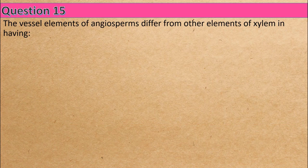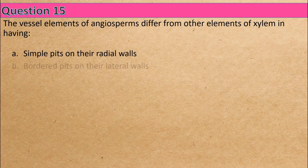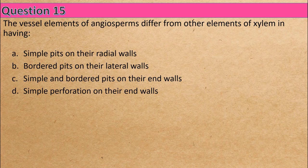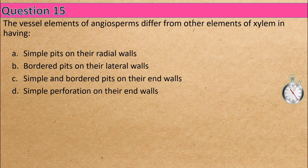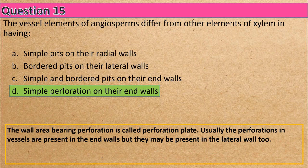Question 15: The vessel elements of angiosperms differ from other elements of xylem in having — Option A: simple pits on their radial walls, Option B: broader pits on their lateral walls, Option C: simple and broader pits on their end walls, Option D: simple perforation on their end walls. The correct answer is Option D: simple perforation on their end walls.